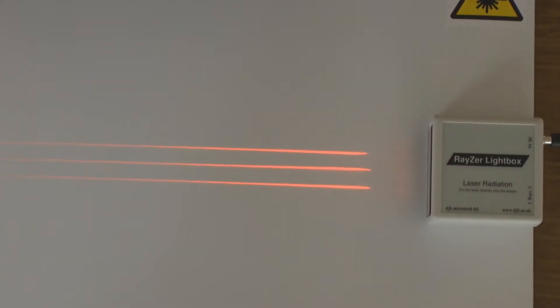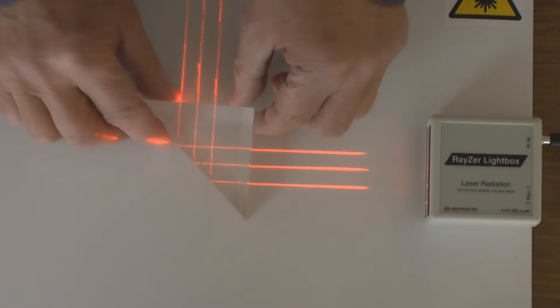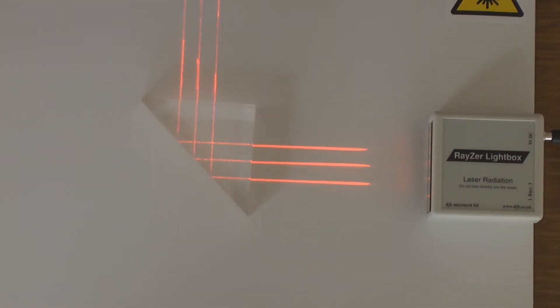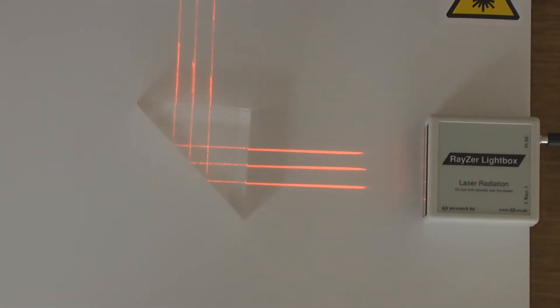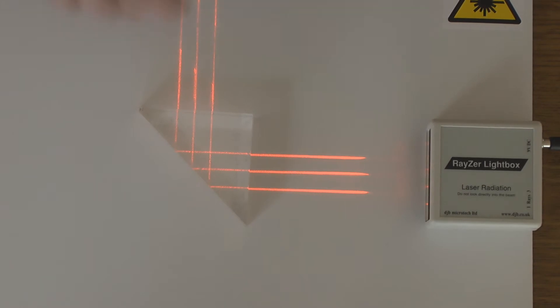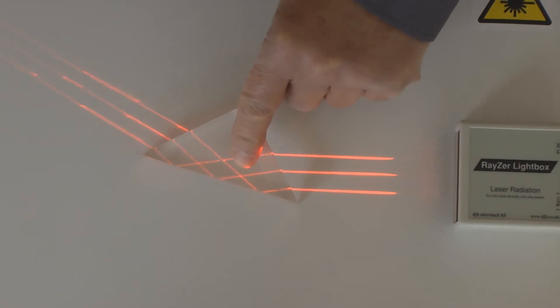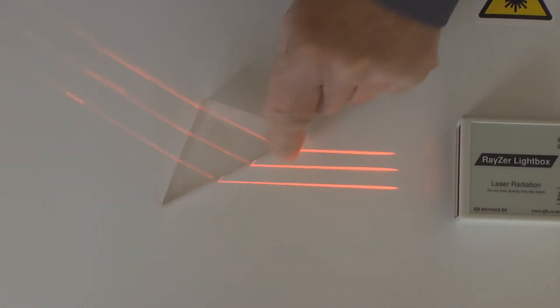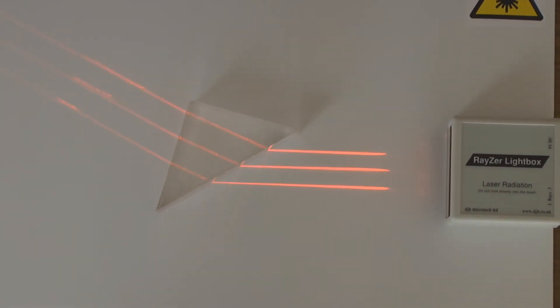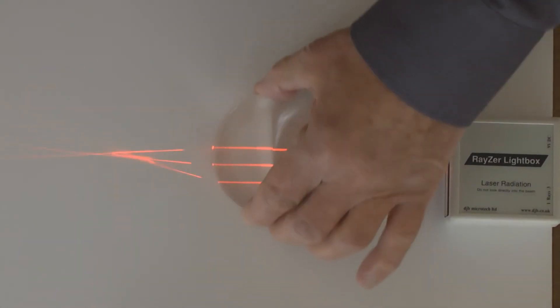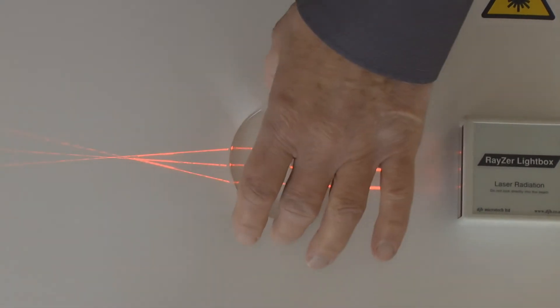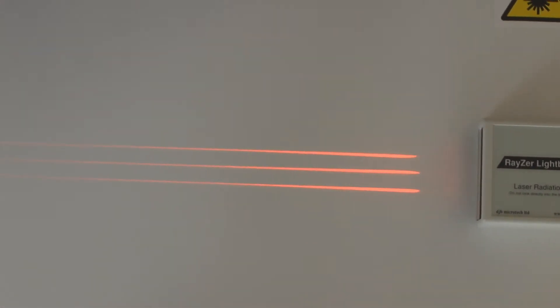We have a prism. It shows total internal reflection, and we have a semi-circular block and also a circular block.